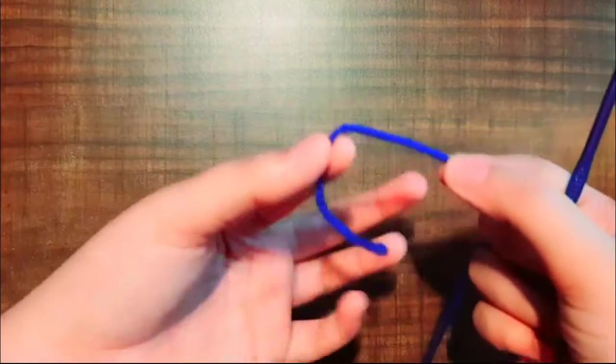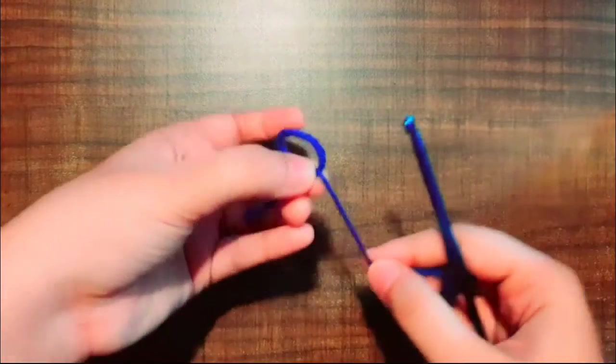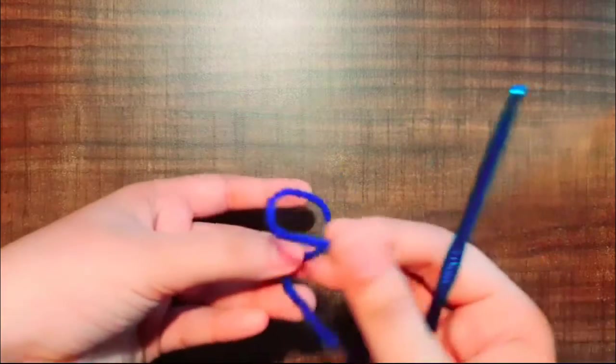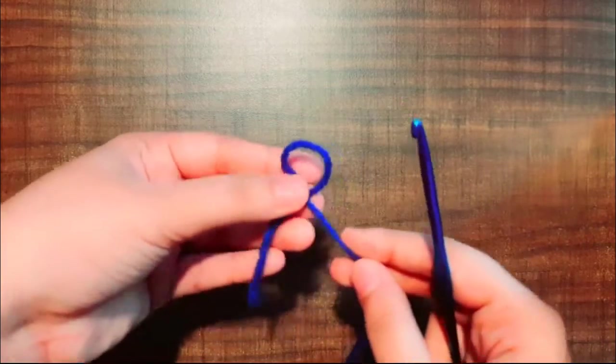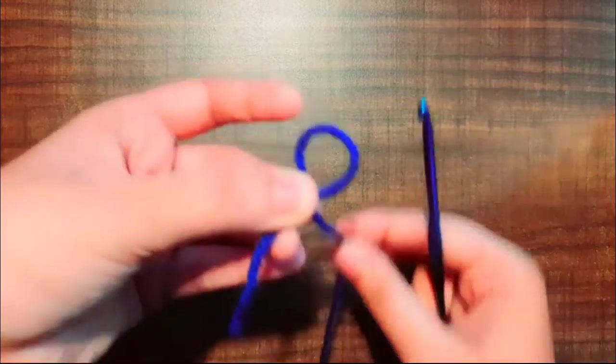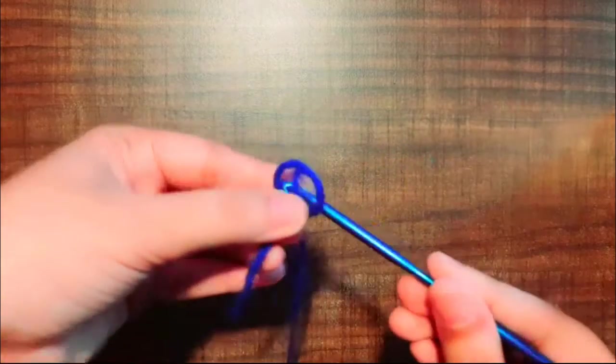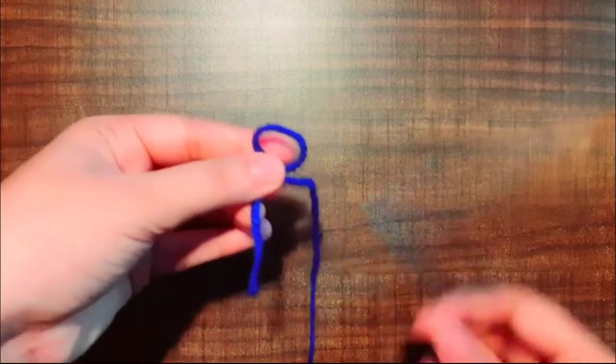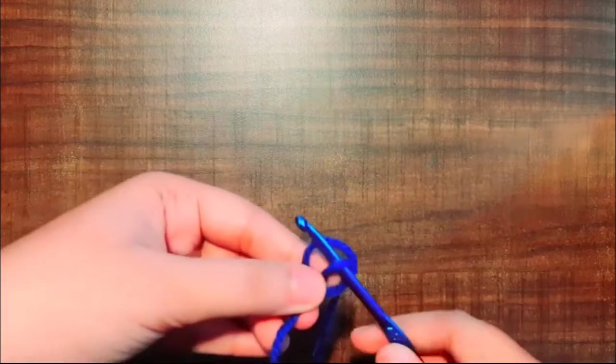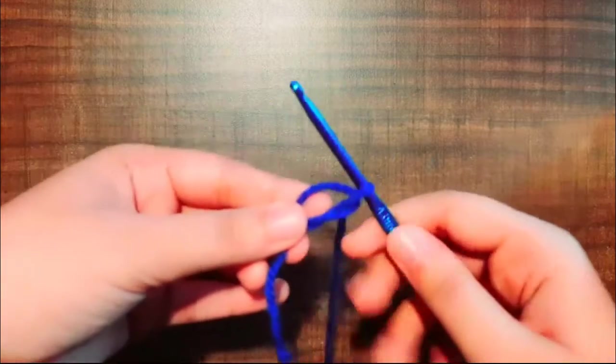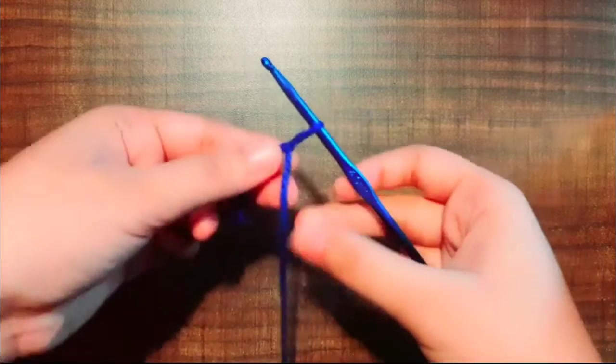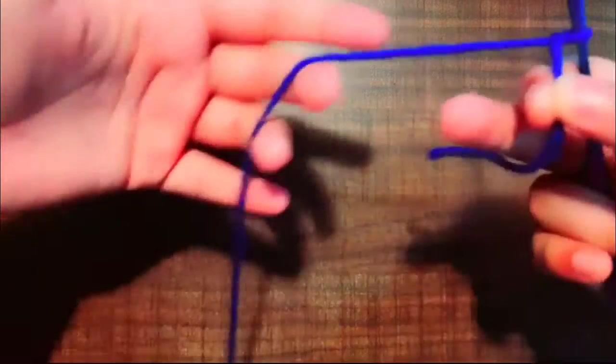First of all, I'm going to take my yarn and make a slip knot. So let's make it. Just follow my steps. I'm gonna pull that yarn from the back side with my hook and here we go, our slip knot is ready.